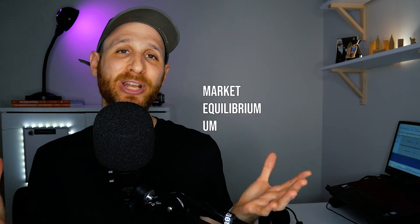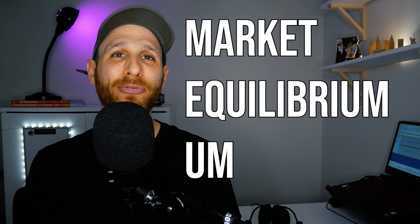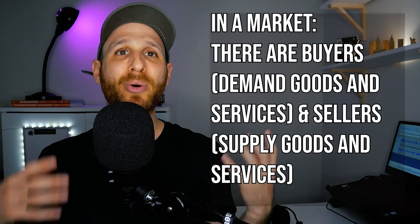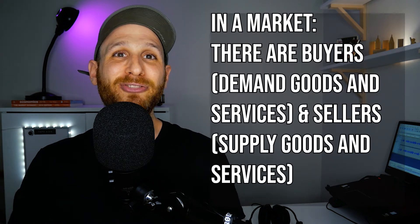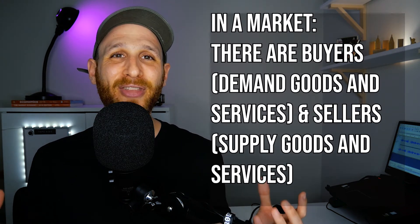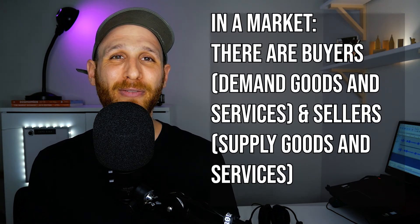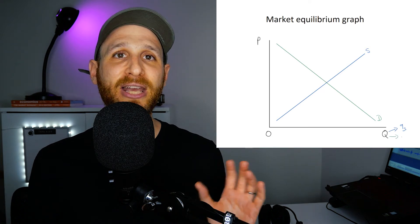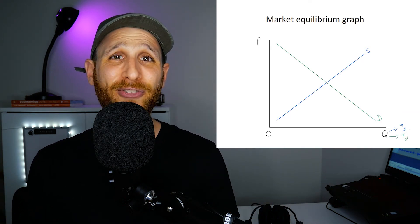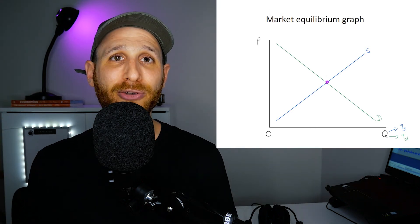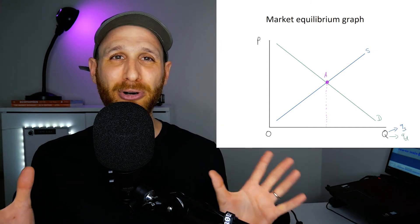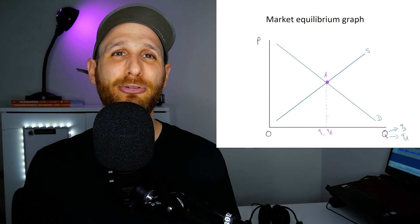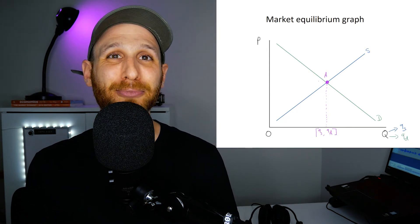Hi, I'm Mr. Simons and in this video we're going to talk about market equilibrium. We've looked at demand and supply in isolation, just on their own. But when we look at economics we need to bring them together. In a market there are buyers who demand goods or services and sellers who supply them. We're going to bring demand and supply together on the same graph to show this magical situation called market equilibrium.